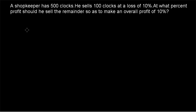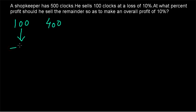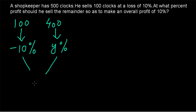Now let's go to the second example. A shopkeeper has 500 clocks. He sells 100 clocks at a loss of 10%. At what percent profit should he sell the remainder so as to make an overall profit of 10%? He divides the clocks into two parts: 100 clocks sold at a loss of 10% (represented as minus 10), and the remaining 400 clocks sold at Y% profit.